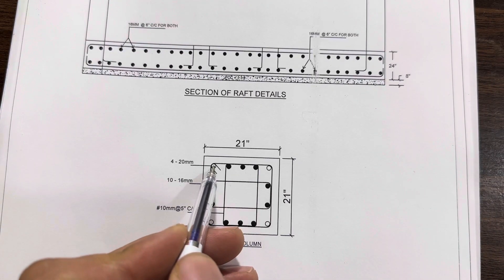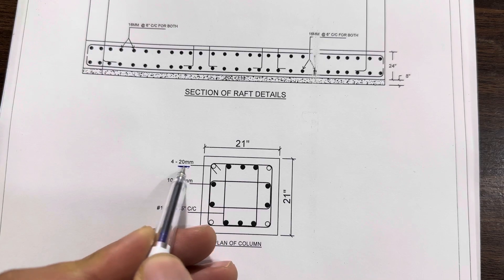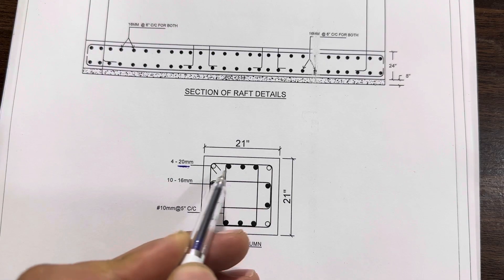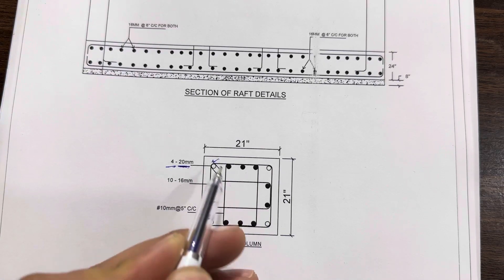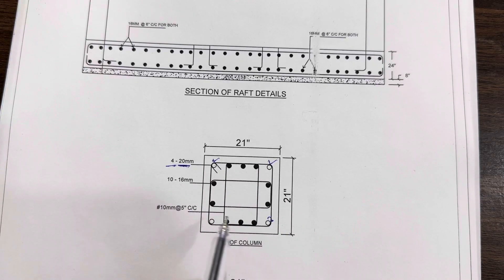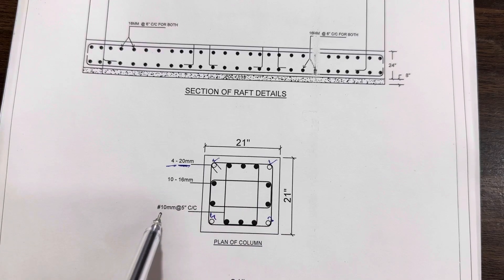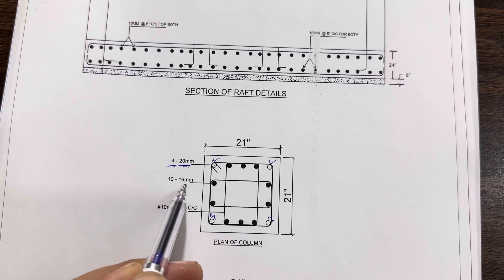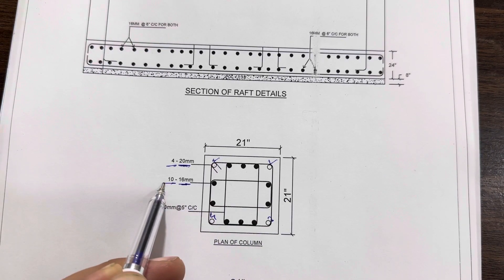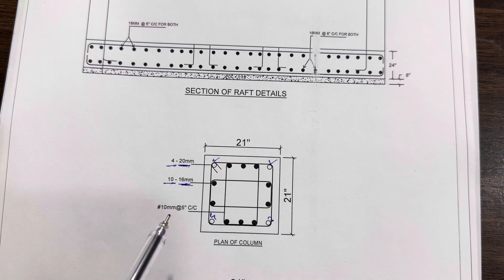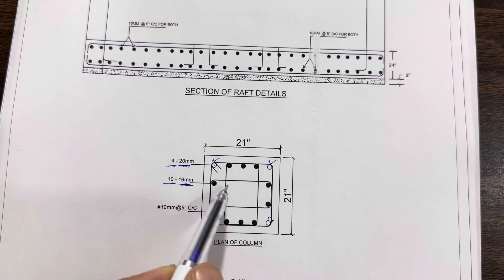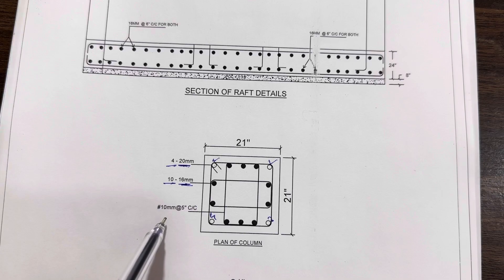Four steel rods dia is 20 millimeter which we provided at the corners of this column, so four numbers - the dia is 20 millimeter. And the other 10 numbers of steel rods dia is 16 millimeter. 10 numbers, 16 millimeter dia of steel rod. We have the lateral tie also, so the dia is 10 millimeter with the spacing of 5 inches center to center.